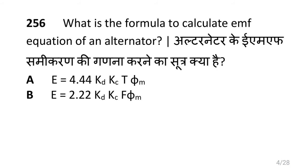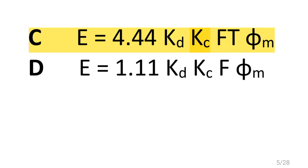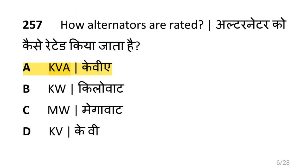What is the formula to calculate EMF of an alternator, i.e. E is equal to 4.44 × Kd × Kc × F × T × Φm, where Φm is the maximum flux? How alternators are rated, i.e. KVA?